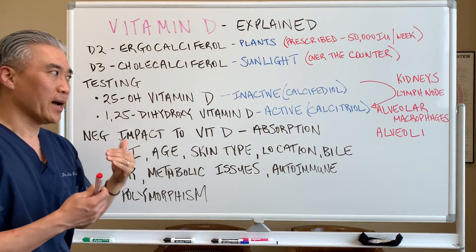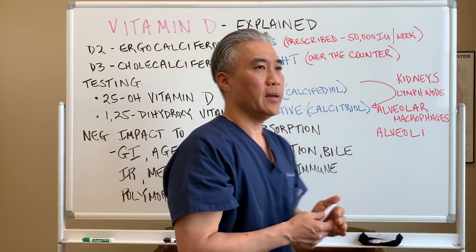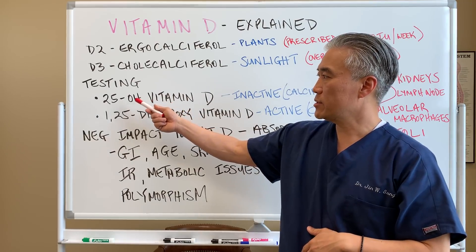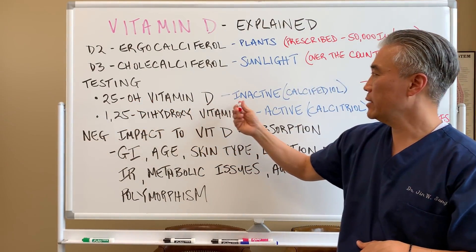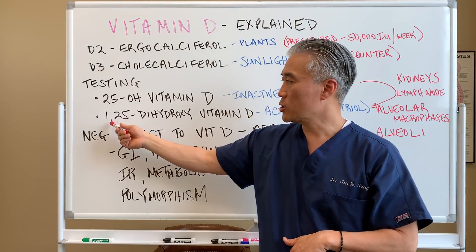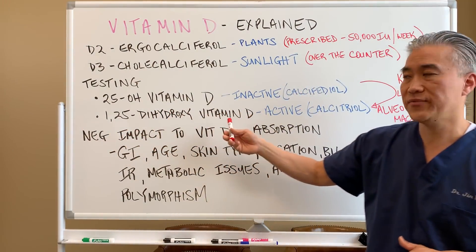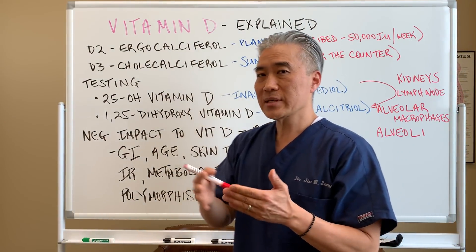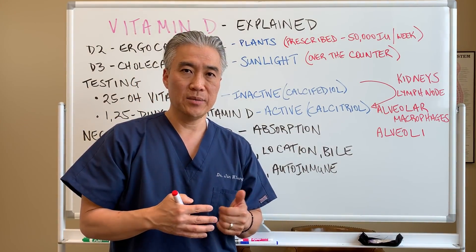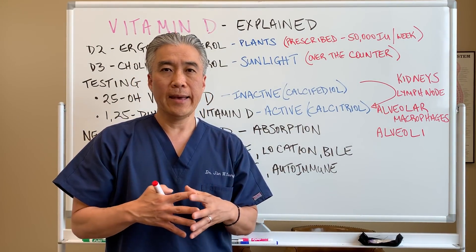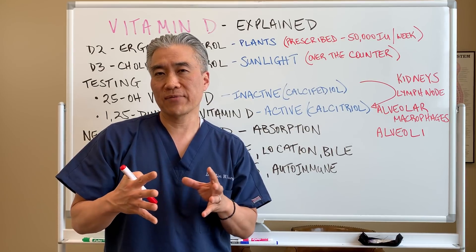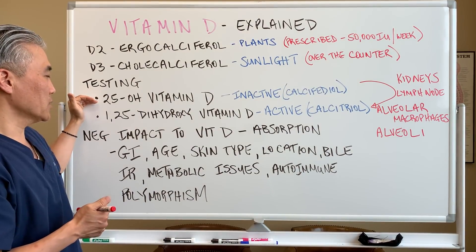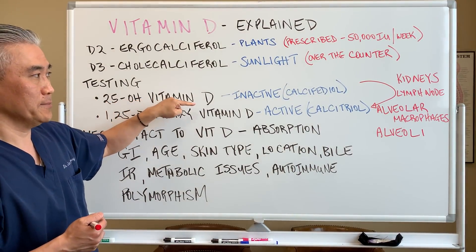In terms of testing, how do we determine if a patient is deficient in vitamin D? There are two tests: 25-hydroxyvitamin D, which is the inactive form, and 1,25-dihydroxyvitamin D, which is the active form. We typically check the 25-hydroxyvitamin D because it's the most abundant in the blood and has a longer half-life. So we check vitamin D levels using 25-hydroxyvitamin D.